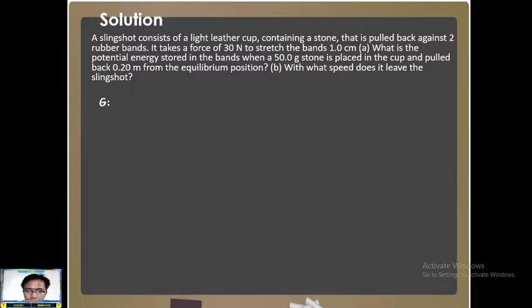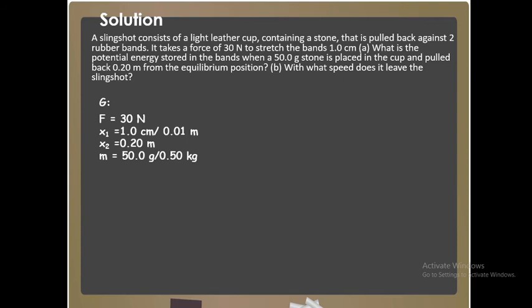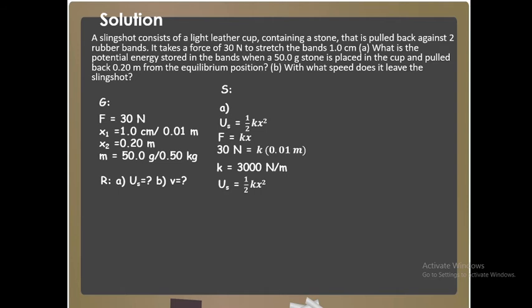What are the givens of our problem? Number one, you have the force, then the X1, the X2, and the mass. You need to convert your mass to kilograms because kilograms is the SI base unit of mass. So what are being required? Number one, you have the internal energy or the elastic potential energy, and of course the velocity. How do we solve this problem? We will use the formula 1 half KX squared, but you are not given your K. So we can solve for K by using Hooke's law. F equals to KX. Then substitute the values, 30 newtons equals to K, 0.01 meters. Then you will get K, 3,000 newtons per meter. We can now solve for the potential energy of the system. So 1 half KX squared, 1 half 3,000 newton meter multiplied by 0.20 meters squared. You will get 60 joules for your energy.